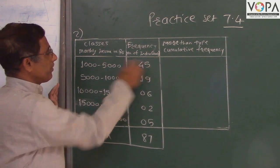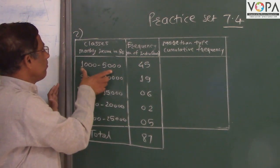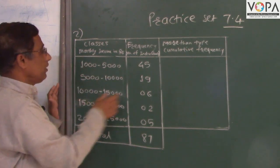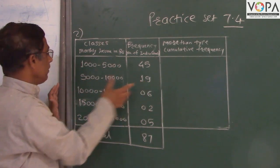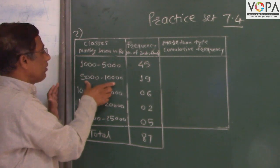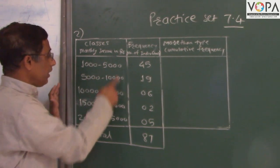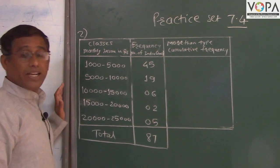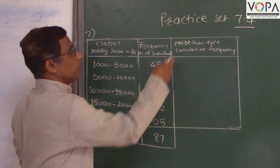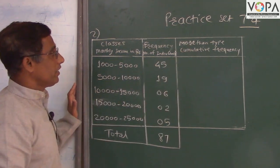45 persons their income between 1000 to 5000. 19 persons their income 5000 to 10000 and like this. And we have to make more than type cumulative frequency distribution table.